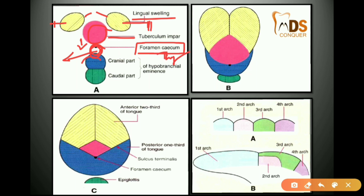The other two swellings present in the medial part are called the cranial part and the caudal part of the hypobranchial eminence. From the caudal part, the epiglottis is developed, whereas the cranial part is involved in the formation of the tongue.